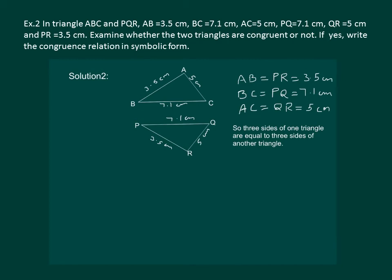So here we can see that three sides of one triangle are equal to the three sides of another triangle, so triangle ABC is congruent to triangle PQR by SSS property.